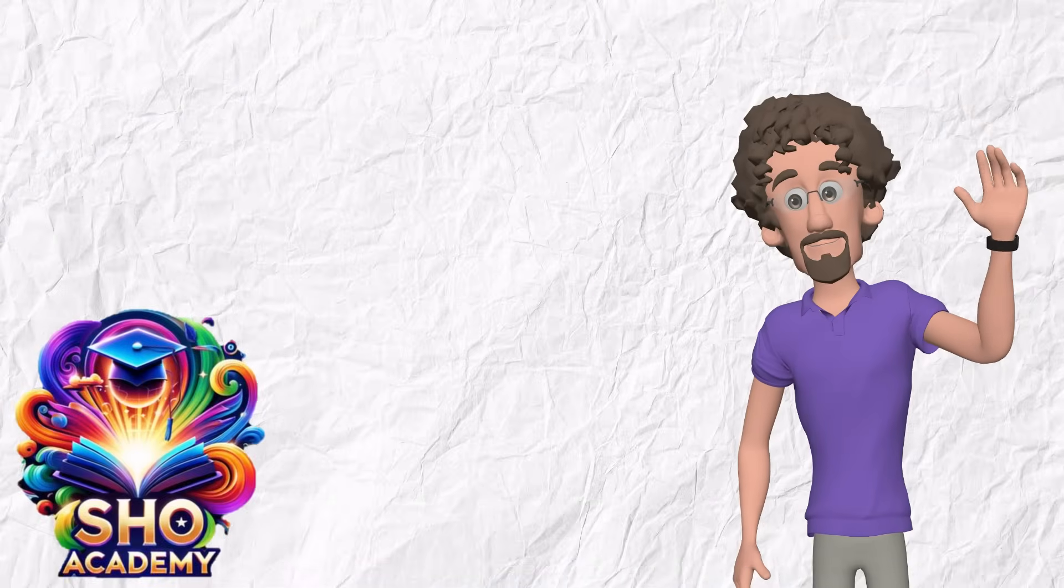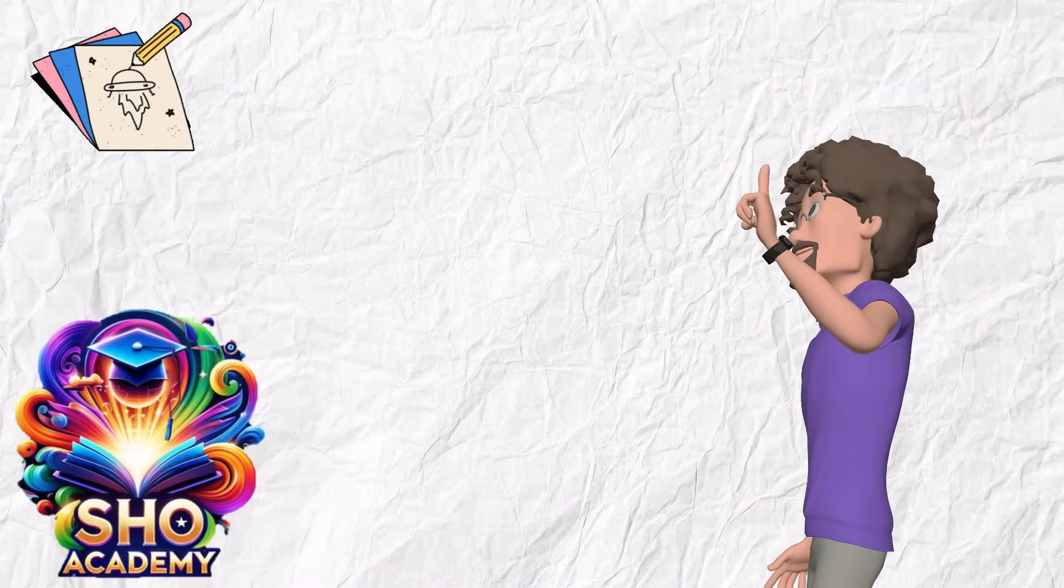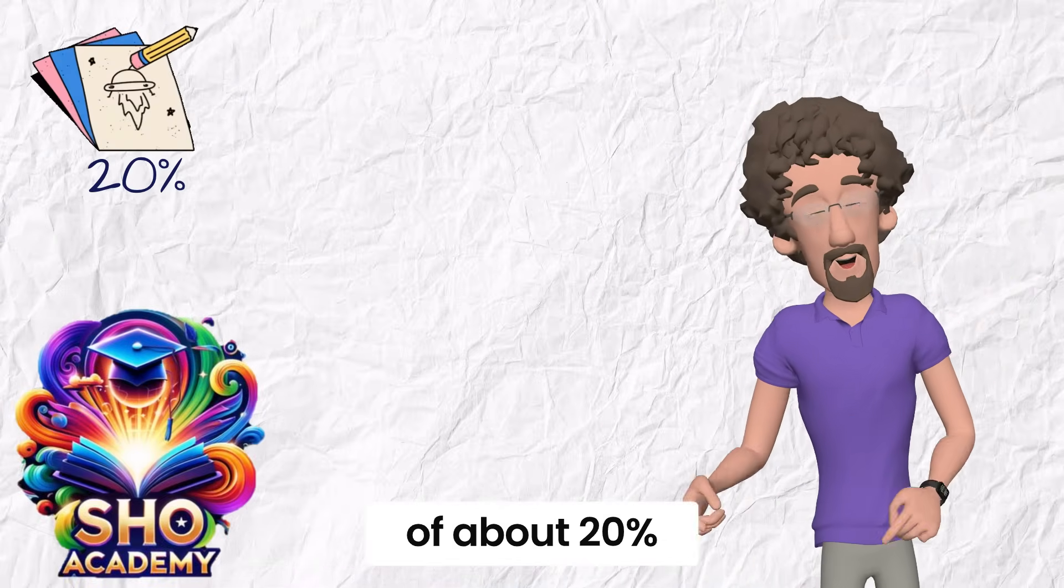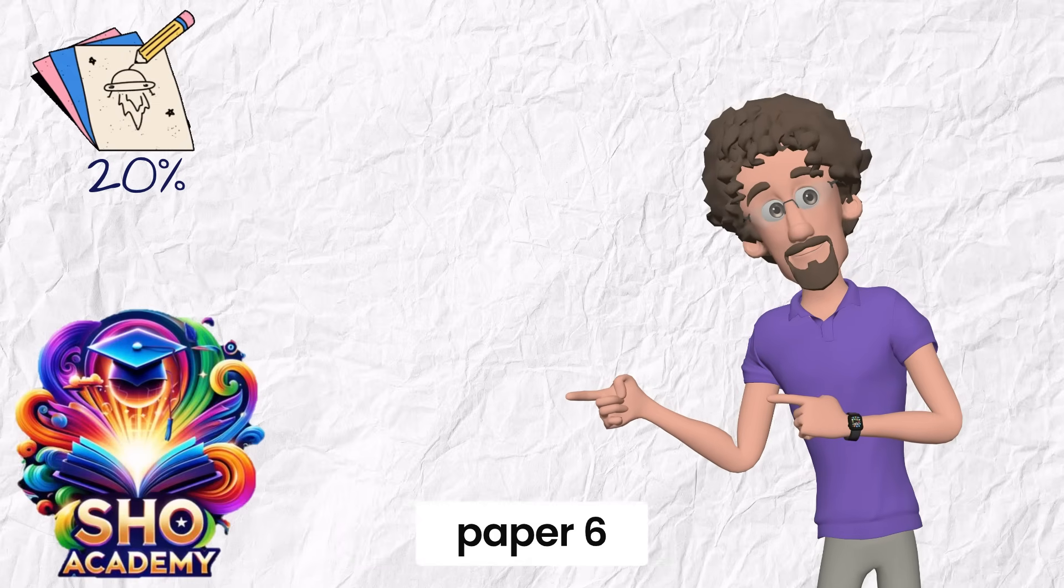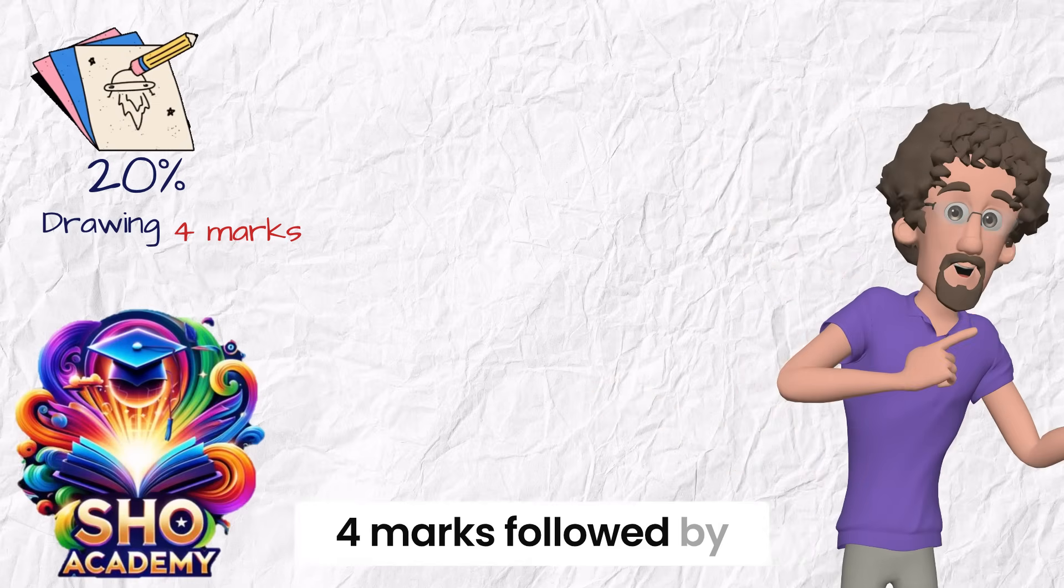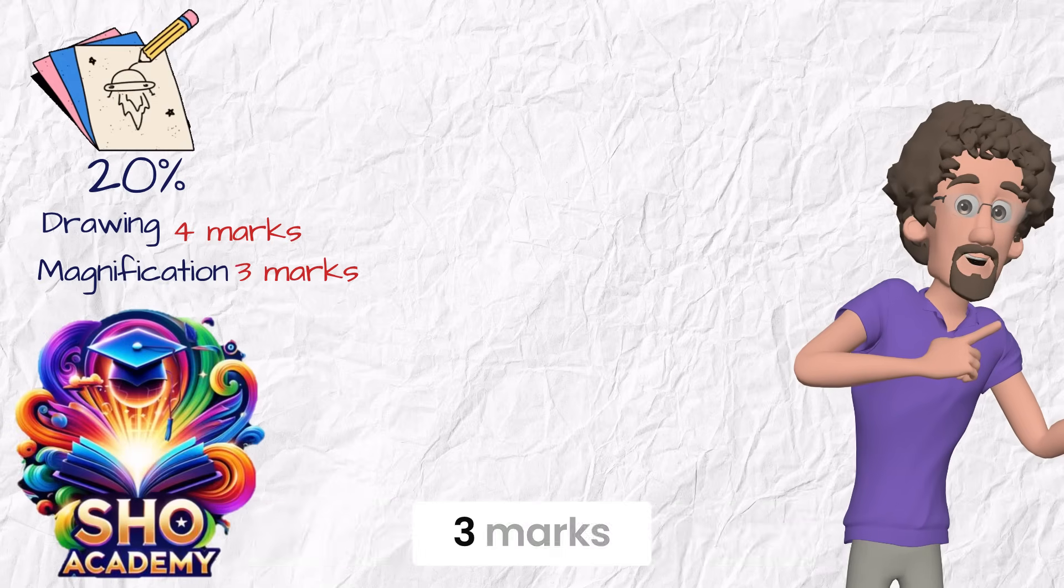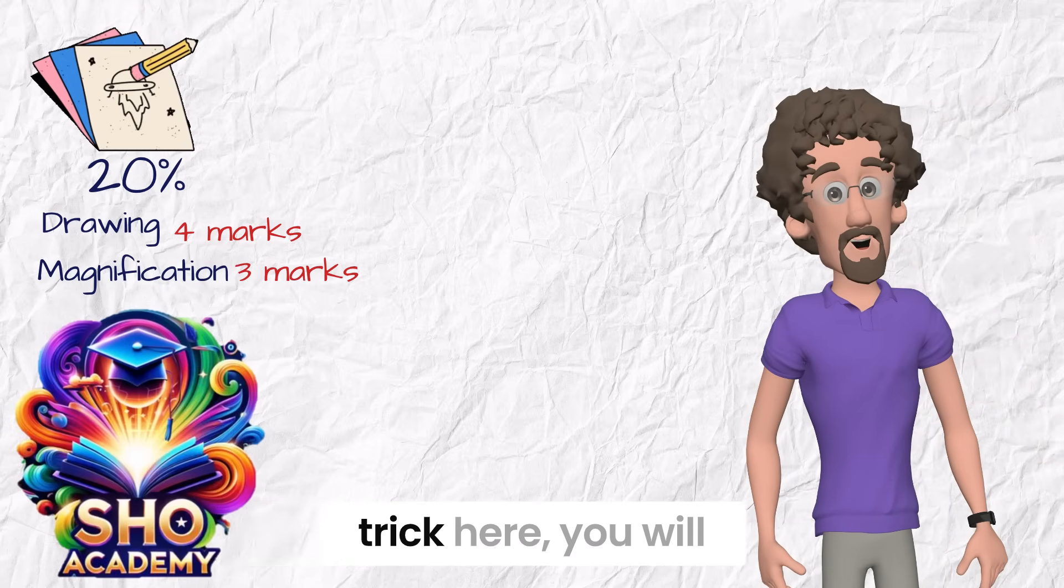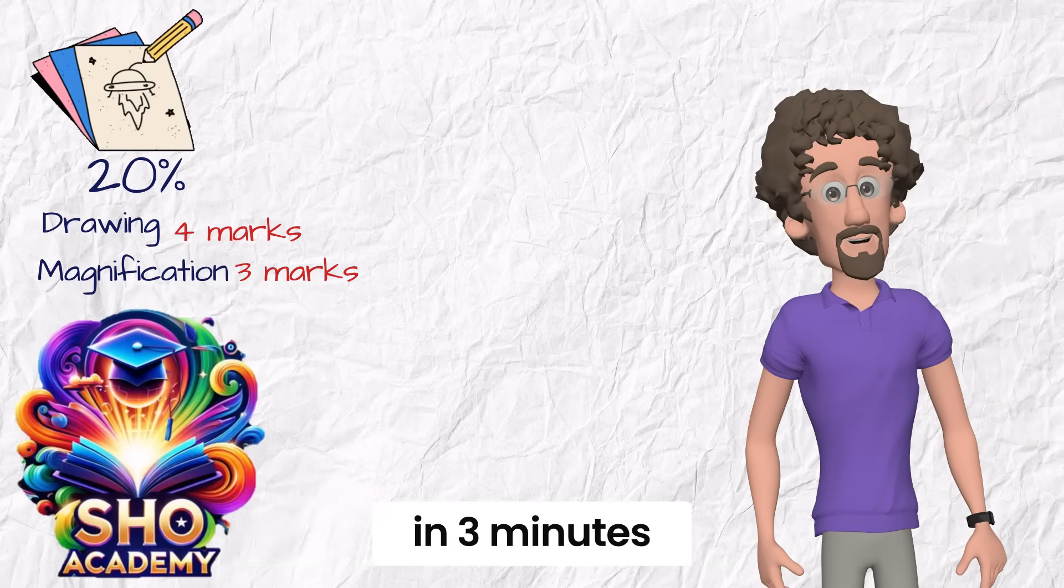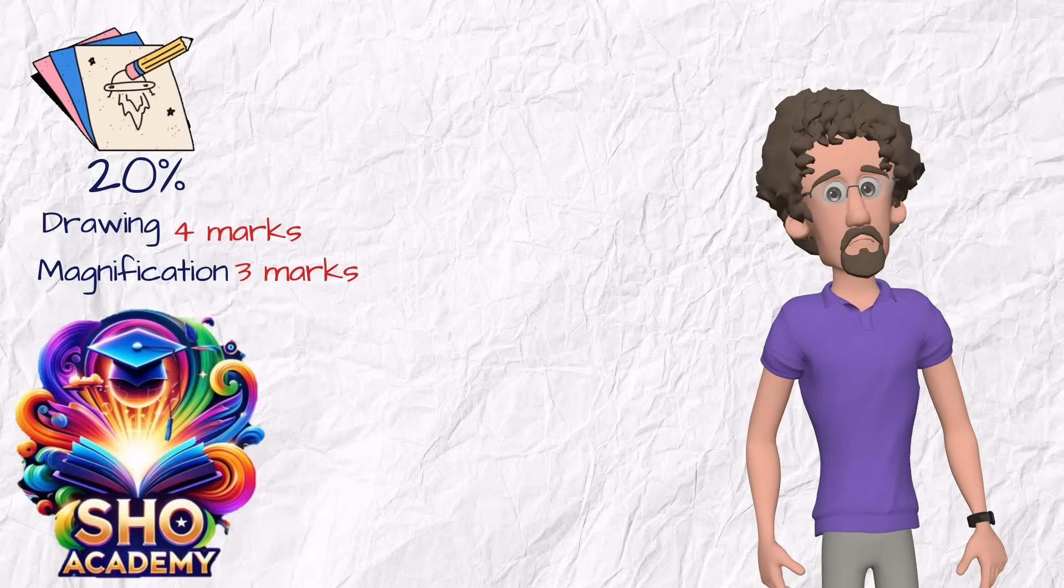Welcome back to Show Academy. Now we are talking about the drawing questions. It's one gift of about 20% of the marks in paper 6. One drawing question of 4 marks followed by one magnification question of 3 marks. If you knew the trick here, you will get the 7 marks in 3 minutes. Let's start now. Pay me your attention.